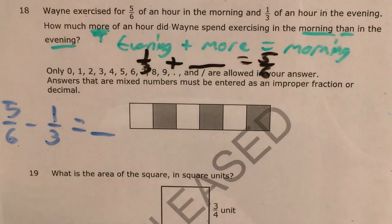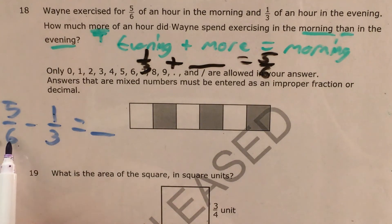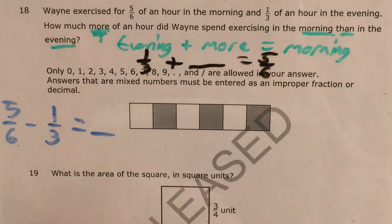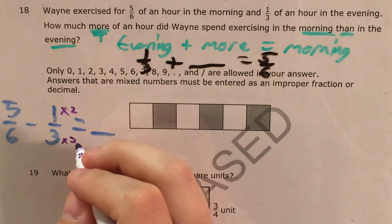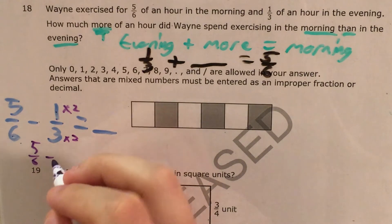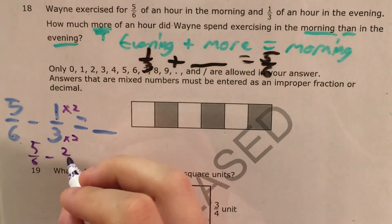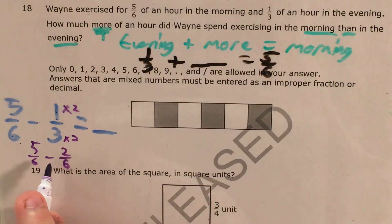At this point we need to recognize that we're subtracting fractions with different denominators, so we need to get these denominators to be equal. Whenever I'm looking at two different denominators, my first question is: does the small one fit evenly into the big one, and if so, how many times? Three times two equals six, so I multiply this fraction by two over two. Five-sixths minus one-third transforms into five-sixths minus two-sixths.